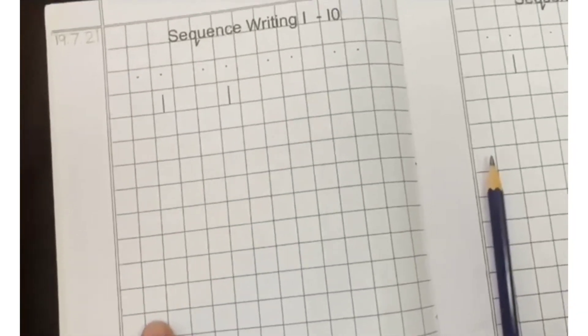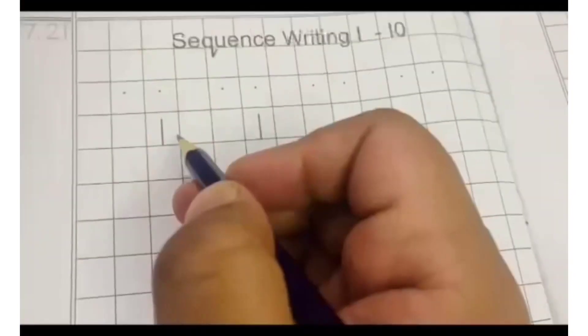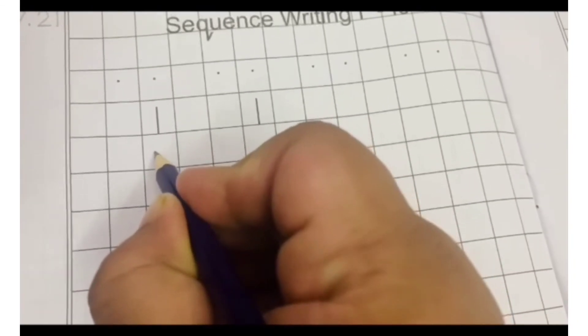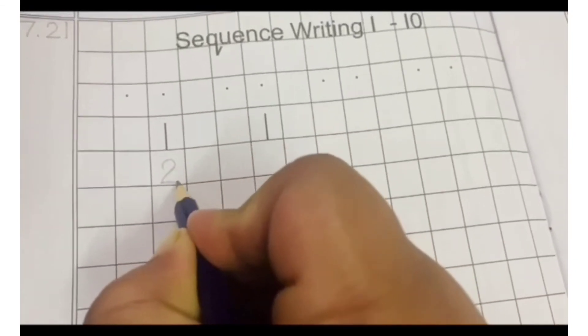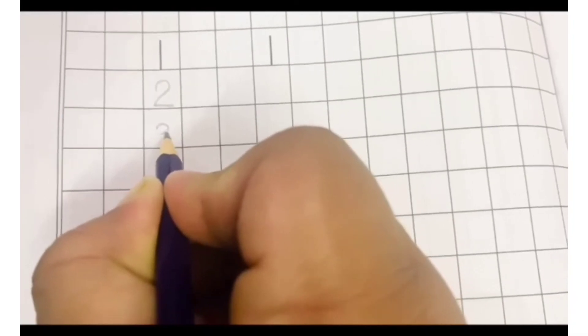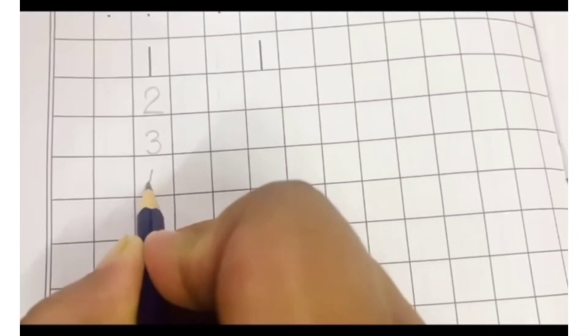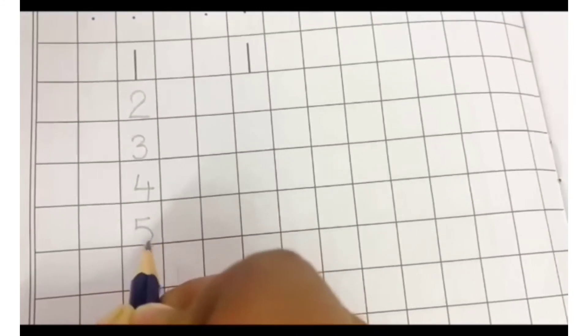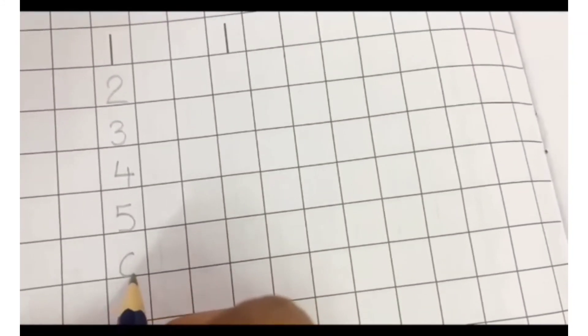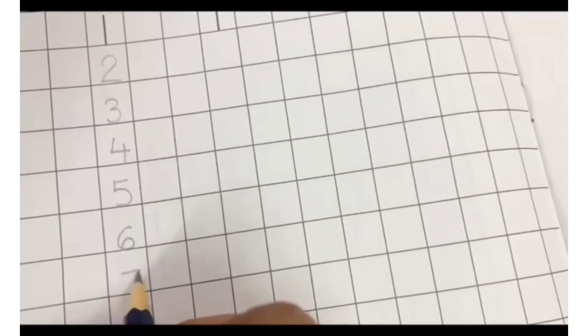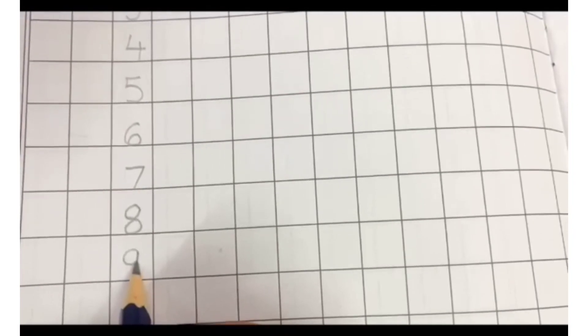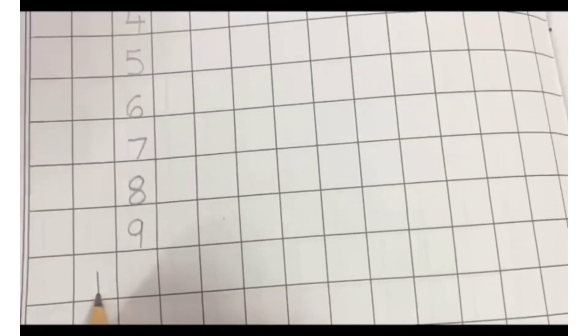So, in these two columns, you will start from the number 2. See, like this. 2, 3, 4, 5, 6, 7, 8, 9, 10.